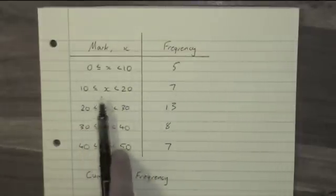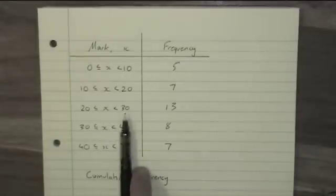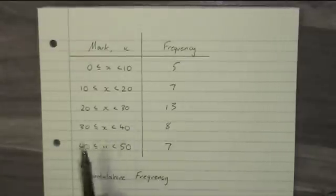Seven people scored between 10 and 20, 13 people scored between 20 and 30, eight people scored between 30 and 40, and so on.